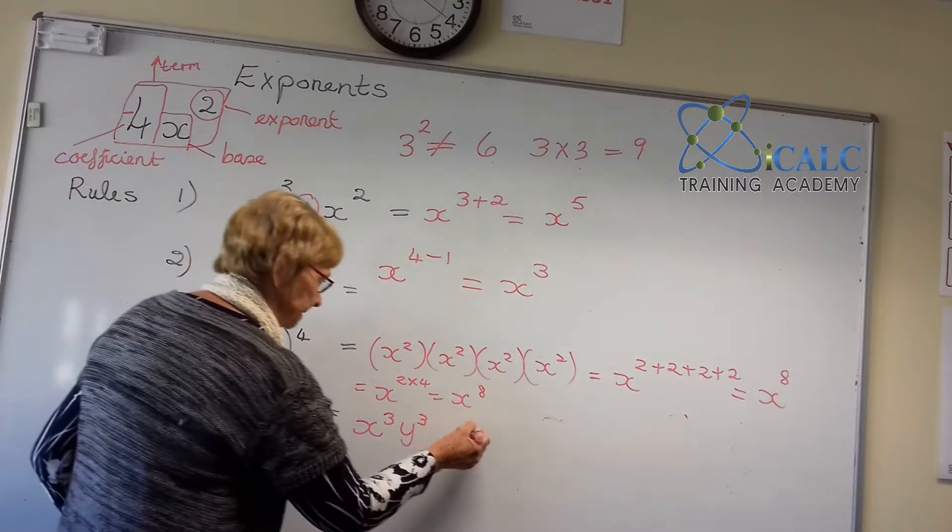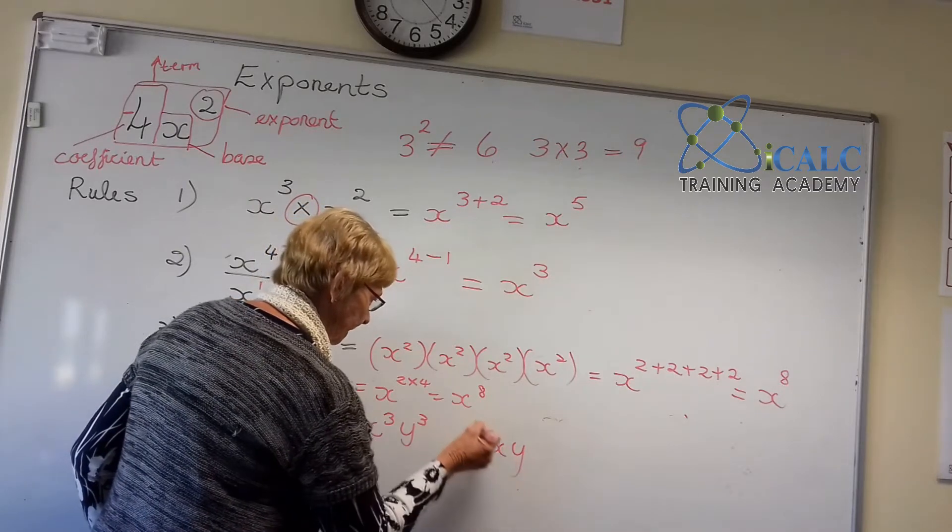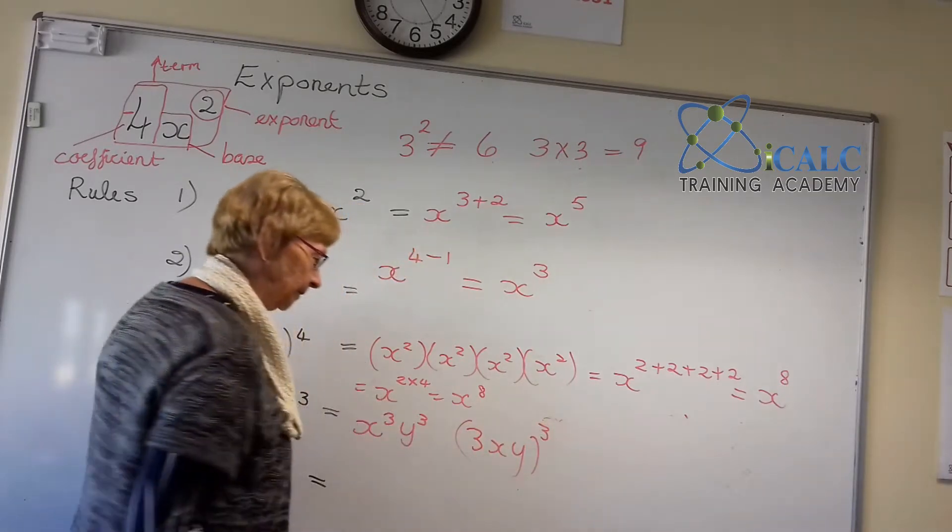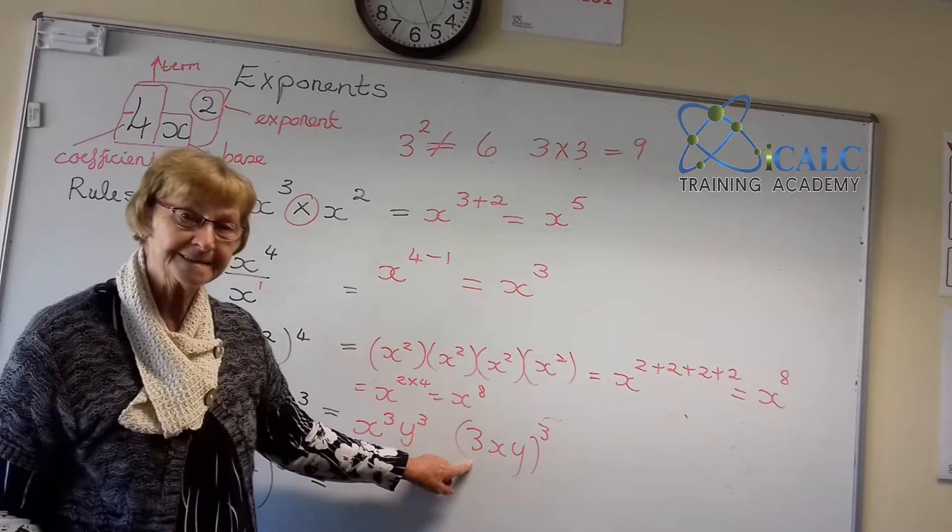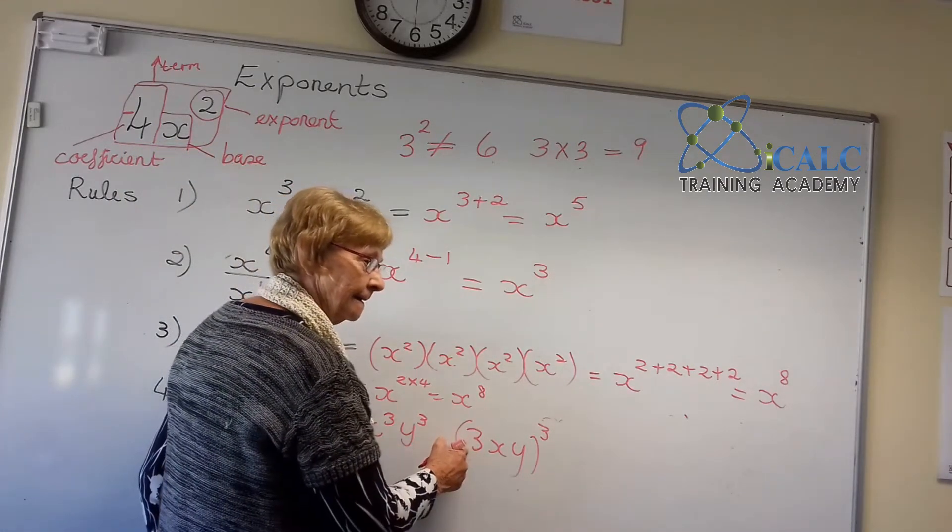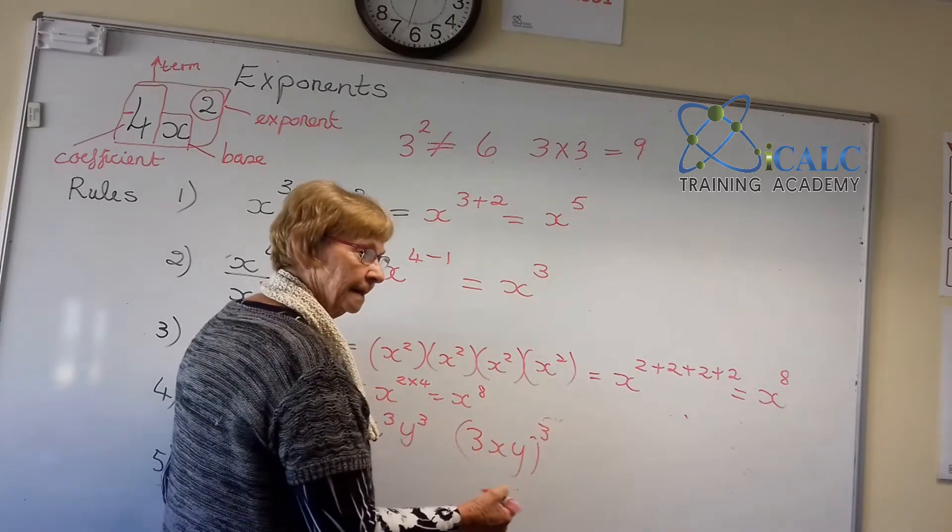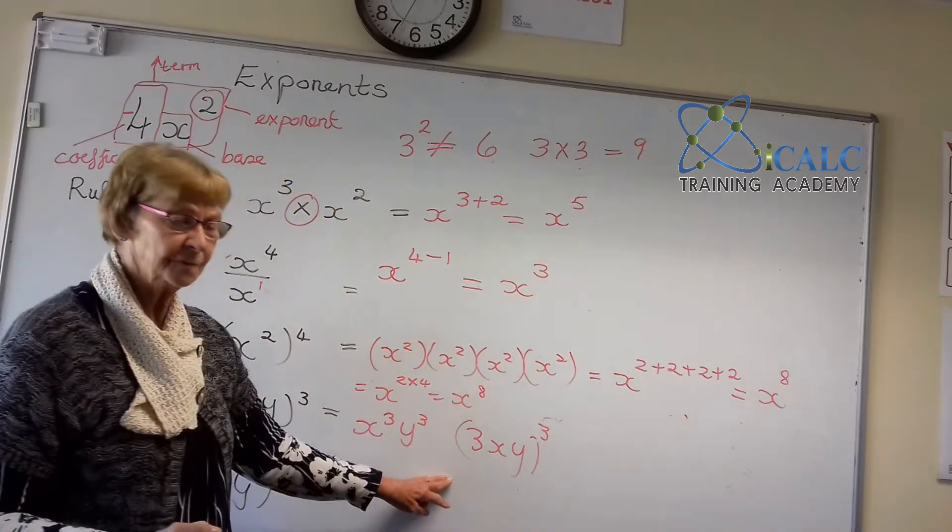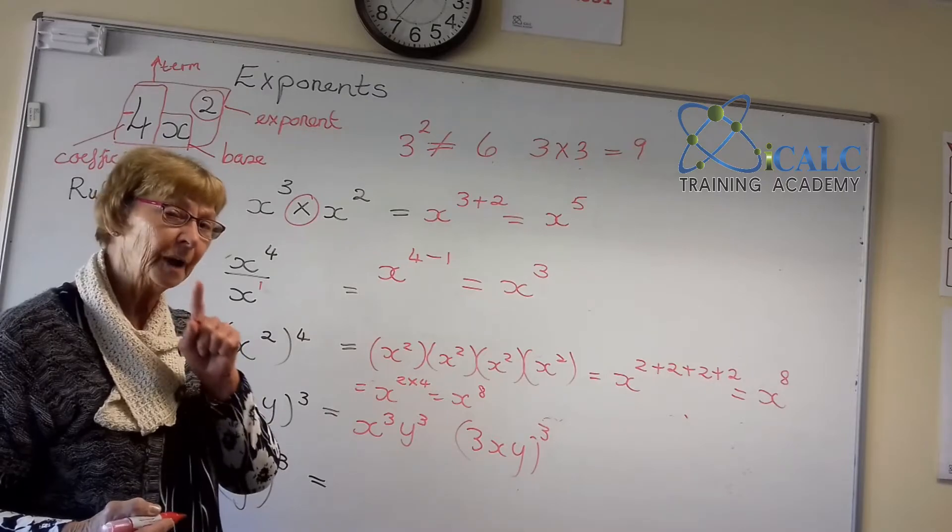Remember, if there was 3xy and raised to the power of 3, then the 3 as well has to be raised to that power. So this will become 3 to the power of 3 becomes, it's not 3 times 3, it's 3 to the power of 3.